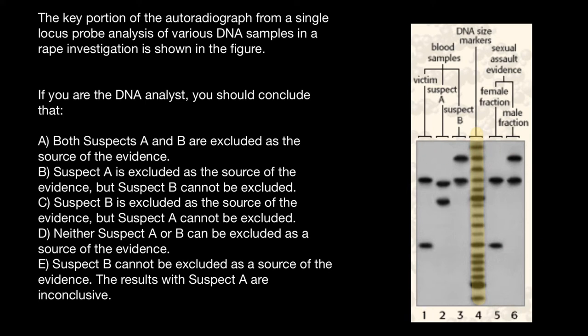Left to this reference ladder, we see blood samples of the victim, suspect A, and suspect B. And on the right side, we see sexual assault evidence. And here we see genetic profile of the female and genetic profile of the male.